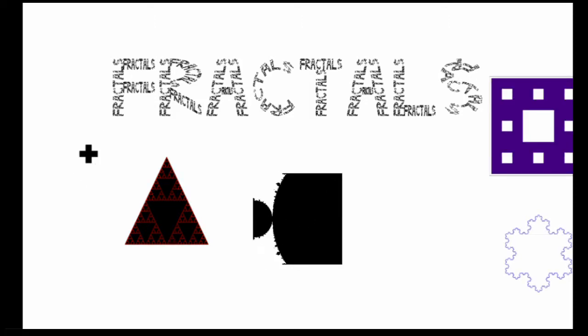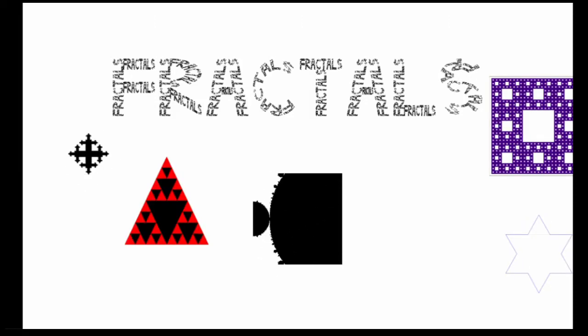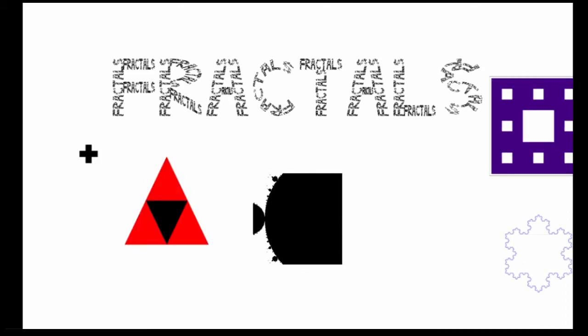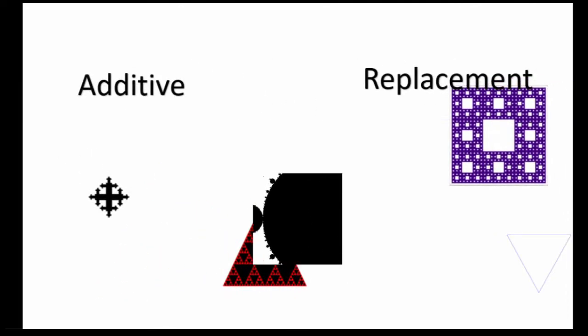Fractals are complex patterns typically generated by the recursion of a simple pattern. There are two main types of fractals: additive and replacement.